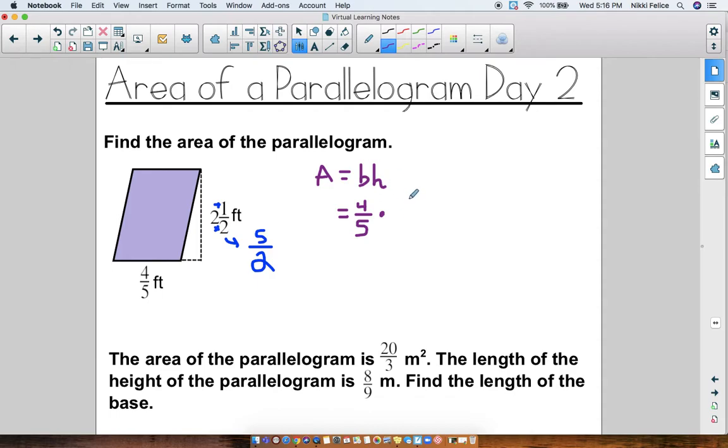Two and a half is the same thing as five over two. So my height is five over two, and when I multiply these straight across the top, straight across the bottom, four times five is 20 over 10. And now, of course, I can simplify 20 over 10. What's 20 divided by 10? It's two. So my area of this parallelogram is two feet squared.